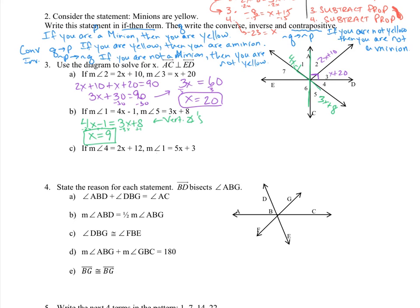Now for part C, it's a different problem again. Angle 4 is 2x plus 12, and angle 1 is 5x plus 3. I know that angle 2 plus angle 3 equals 90 in this diagram. So if I add up all four angles — angle 1, angle 2, angle 3, and angle 4 — I'm going to get 180.